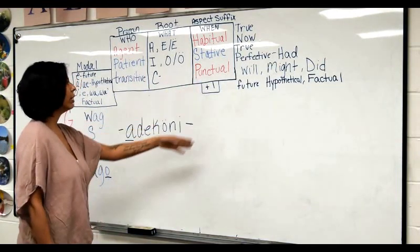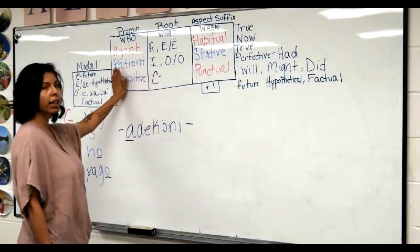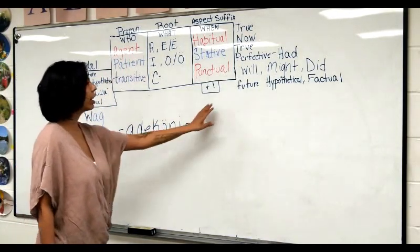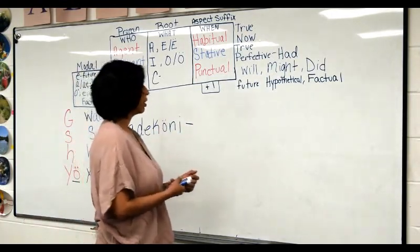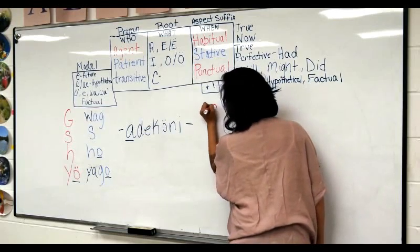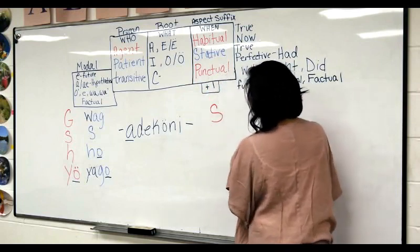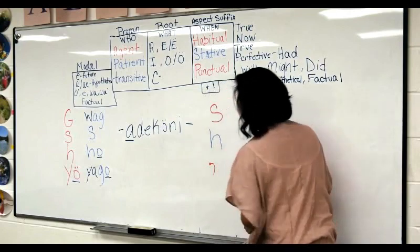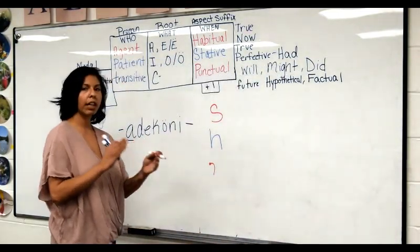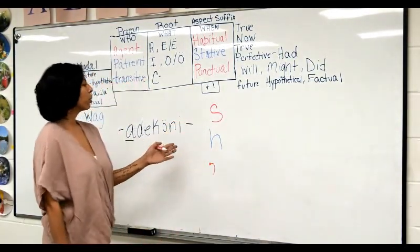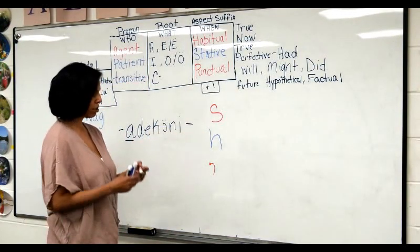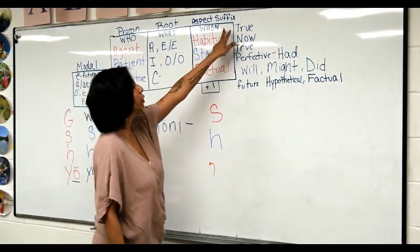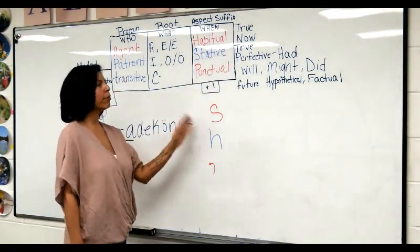Moving over here, the third part of our puzzle — we have puzzle piece one and puzzle piece two. I'm not going to get into transitives; that'll be a whole other lesson. I just want to focus on agents and patients. So we have our verb root, and now we're going to get into our aspect suffix. On this particular word, a habitual is denoted by an s, a stative is denoted by an h, and a punctual will be a glottal — a sudden stop, like 'uh.'